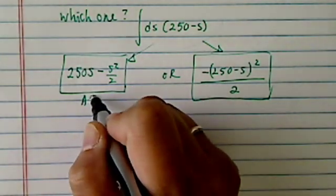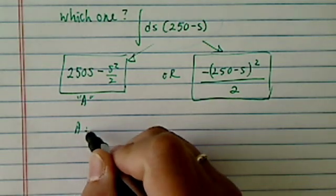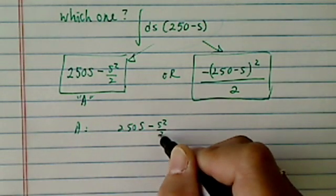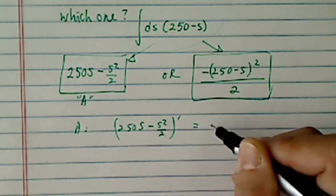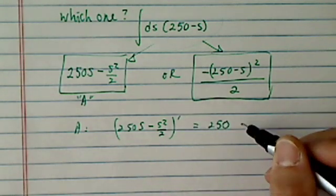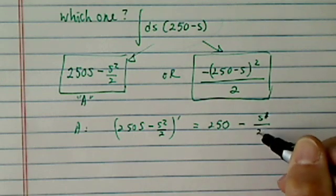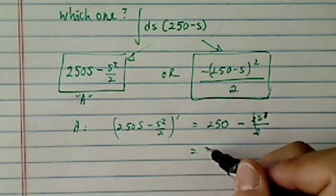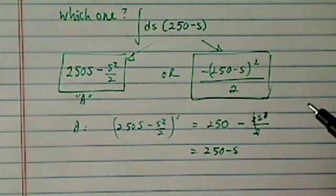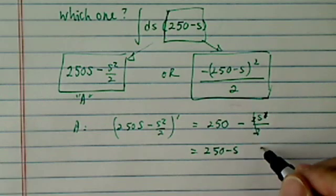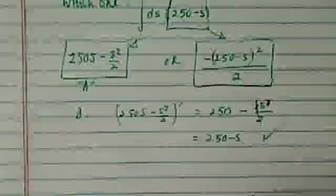Okay, so let's check on answer A here. If we take a derivative of 250s minus s squared over 2, that's equal to 250 minus s squared, which is s1, and then 2, 2, cancels. So we do have 250 minus s, which is the core of this one. So it does check out.